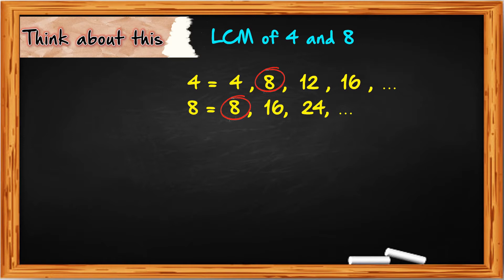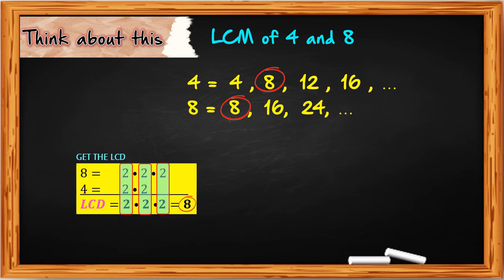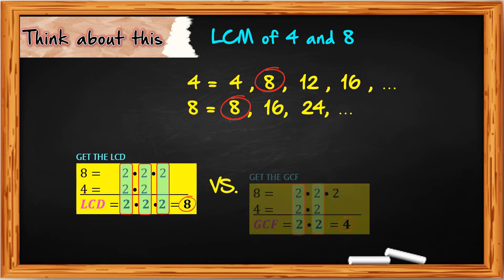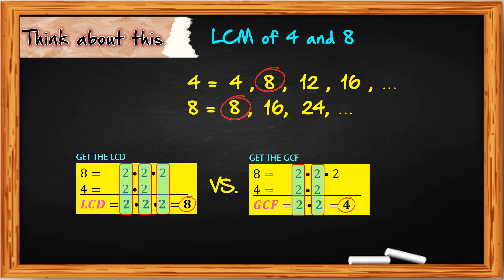The other way of getting the LCM is using prime factorization, which is also used in getting the greatest common factor or GCF. Getting the LCM is the same process as getting the LCD. We bring down and include the relatively prime or no common factors. But in the greatest common factor, we only multiply the common factors. So for the LCD we have 8, and for the greatest common factor we have 4.